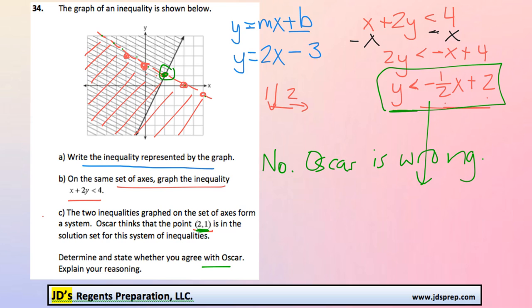So we'd say 1 is less than negative 1 half times x, which is 2, plus 2. And this would become negative 1 plus 2, which is 1. But 1 is not less than 1, right? So that proves that this is not part of the solution set.